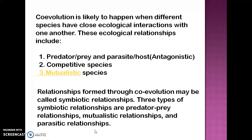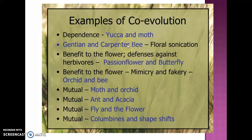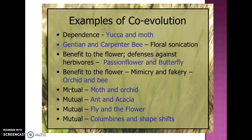Species interactions persist for longer times due to coevolution. Examples of coevolution include: yucca and moth, which are mutually dependent; gentian and carpenter bee through flower sonication; passion flower and butterfly as defense against herbivores; orchid and bee through mimicry and fakery. Mutualistic examples include moth and orchid, ant and acacia, fly and flower, and columbines. Other examples are deep nectar in flowers and long proboscis in insects, evolution of pollinating strategies in angiospermic flowers, evolution of predator-prey, host-parasite, and mimicry relationships.